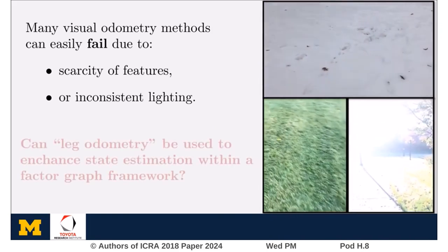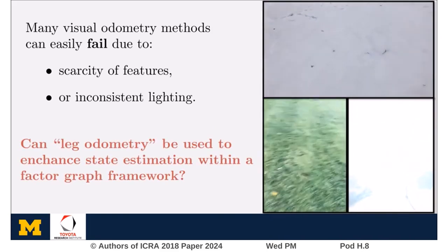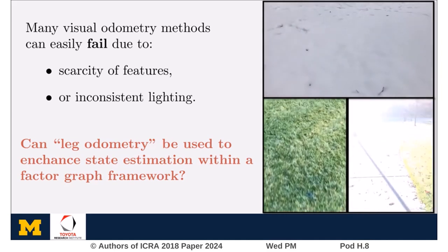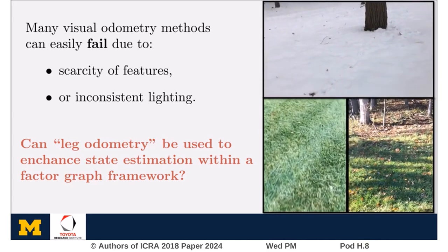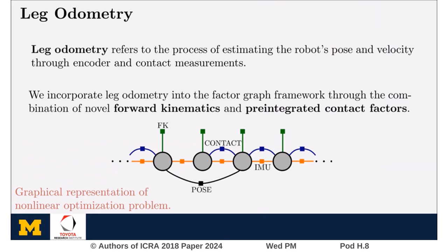So the question becomes: can we use leg odometry to improve our factor graph-based state estimator so we don't have to rely so heavily on vision? Leg odometry refers to the process of estimating a robot's pose through noisy encoder and contact measurements. In this project, we present a method for incorporating leg odometry into the factor graph framework through the combination of novel forward kinematic and pre-integrated contact factors.